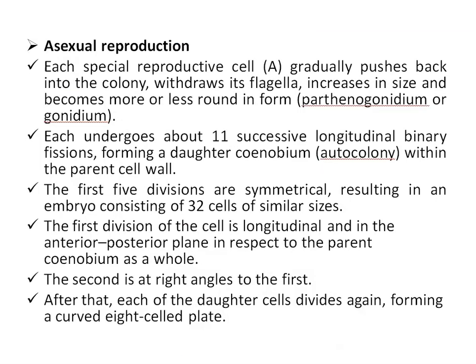First, we will discuss asexual reproduction. The daughter colony or gonidium grows from the reproductive cells around the equator of the colony. Each special reproductive cell gradually pushes back into the colony, withdraws its flagella, increases in size and becomes more or less round in form — this is the gonidium. Each then undergoes about 11 successive longitudinal binary fissions, forming a daughter coenobium within the parent cell wall.